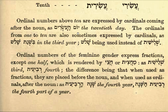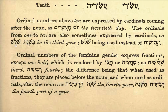Ordinal numbers above ten are expressed by cardinals coming after the noun, as in yom ha-esrim, meaning 'the twentieth day.'